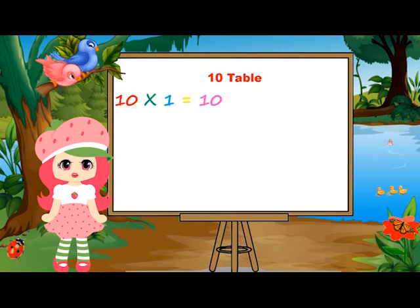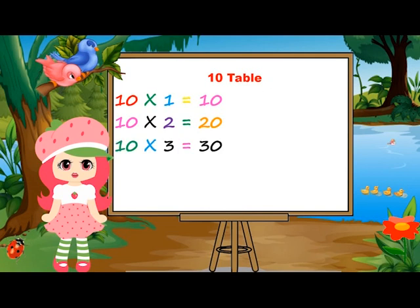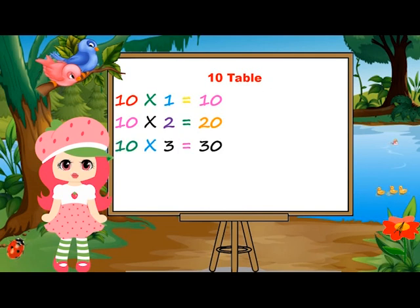10 ones are 10. 10 ones are 10. 10 twos are 20. 10 twos are 20. 10 threes are 30. 10 threes are 30.